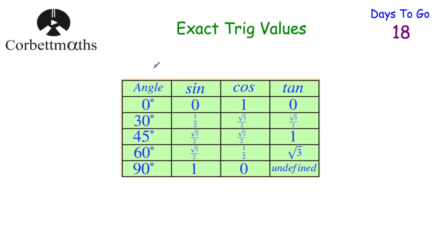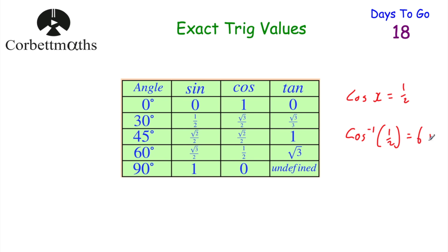These exact trig values are quite useful to know. You might be given a question such as 'write down the value of tan 45°' and without a calculator you just need to know it's 1. Or you might be doing a trig question on a non-calculator paper and need to know that sin 30° = 1/2. Or if you get that the cos of an angle equals a half, you need to know that cos 60° = 1/2, so the inverse cos of 1/2 is 60 degrees.